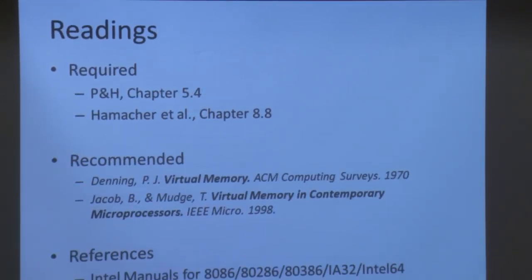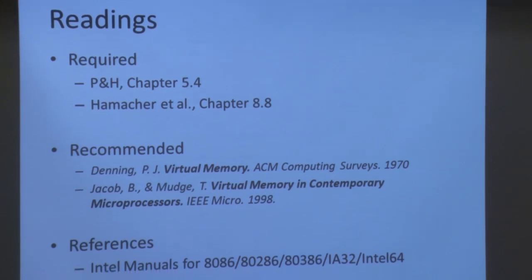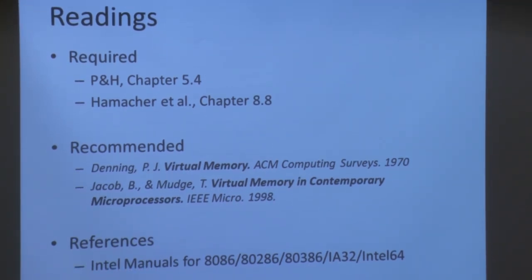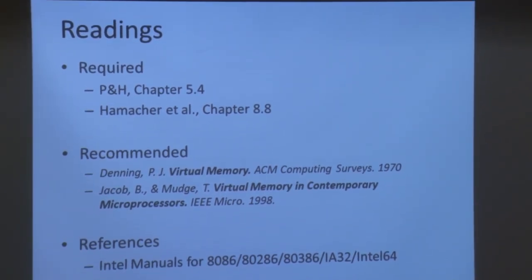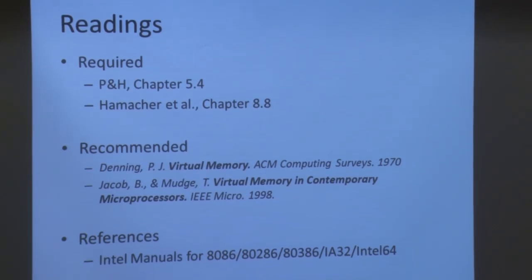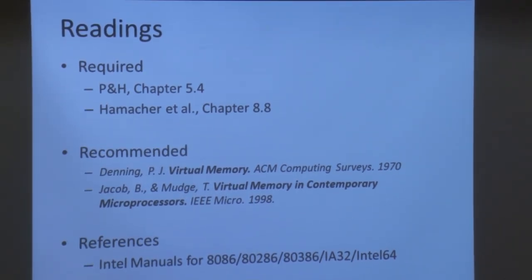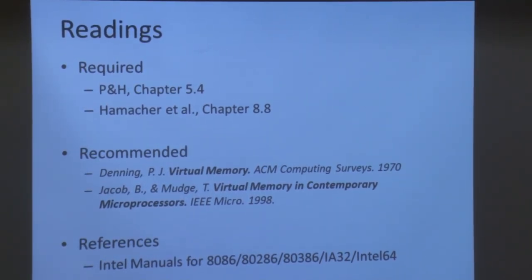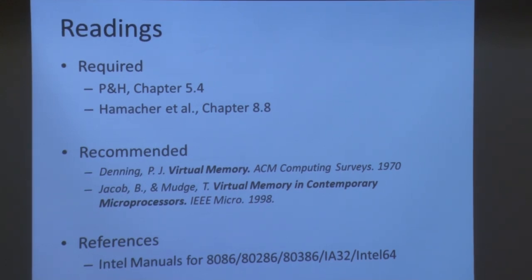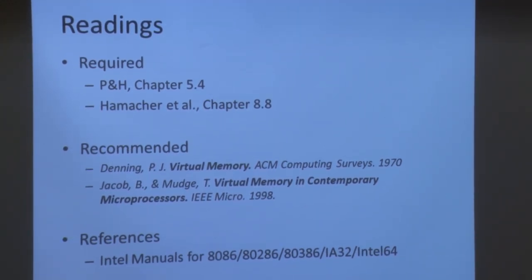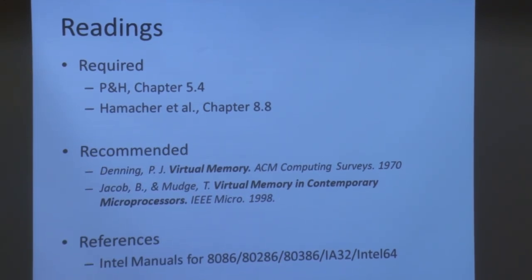The readings for today, as listed on the course website, are Patterson and Hennessey chapter 5.4 and Hamaker et al.'s book chapter 8.8. Two recommended papers are 'Virtual Memory' by Denning, and a paper by Bruce Jacob and Trevor Mudge, 'Virtual Memory and Contemporary Microprocessors,' published in IEEE Micro '98.